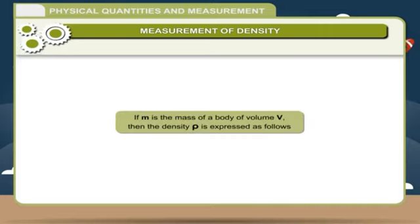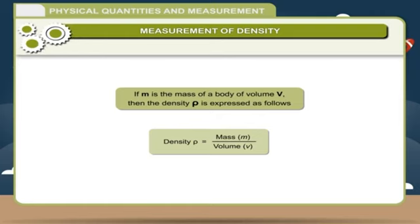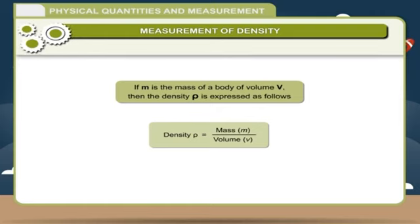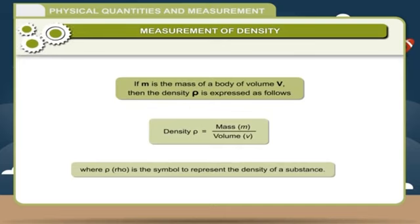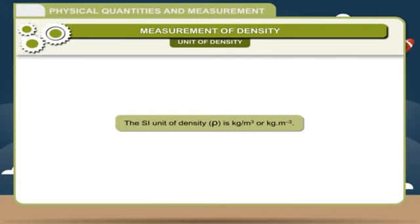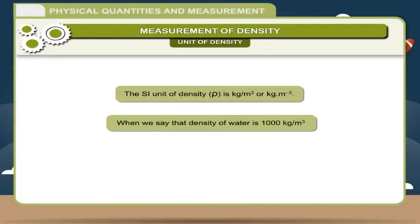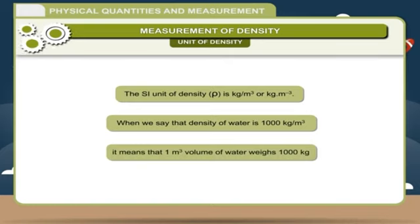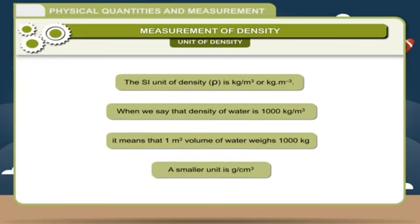Formula: If M is the mass of a body of volume V, then density ρ is expressed as: ρ = M / V, where ρ (rho) is the symbol representing the density of a substance. The SI unit of density is kilogram per cubic meter (kg·m⁻³). When we say the density of water is 1,000 kg/m³, it means 1 cubic meter of water weighs 1,000 kilograms. A smaller unit is gram per cubic centimeter.